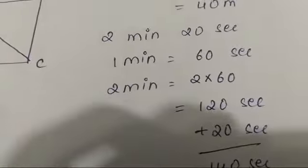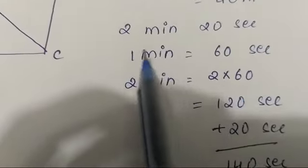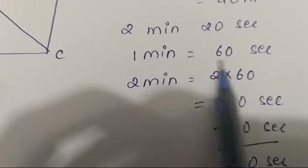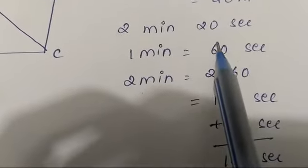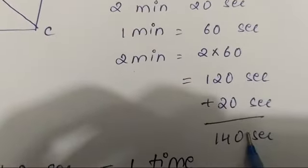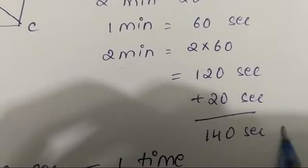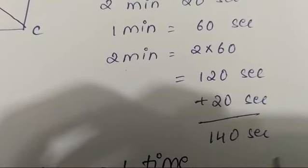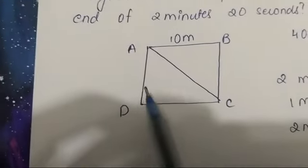First, we will convert 2 minutes and 20 seconds to seconds. 1 minute is 60 seconds, 2 minutes is 2 into 60 seconds, so that becomes 120 seconds. Add 20 more seconds, so it becomes 140 seconds. So you have to find how much displacement occurred in 140 seconds. Now let's see the field again.